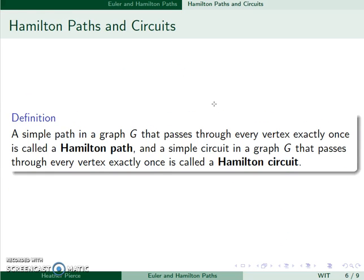We can also have a Hamilton path and circuit. A Hamilton path is a simple path that passes through every vertex exactly once. So we no longer need every edge, just every vertex. A simple circuit that passes through every vertex exactly once is called a Hamilton circuit.